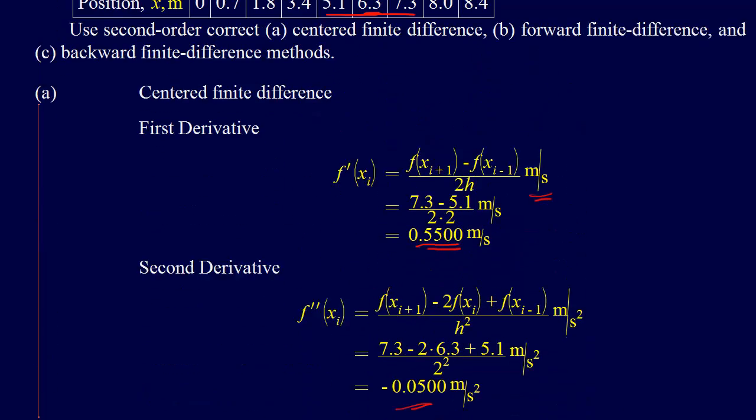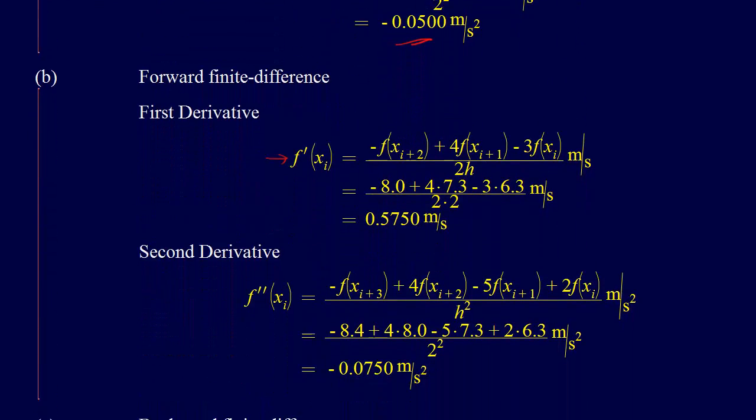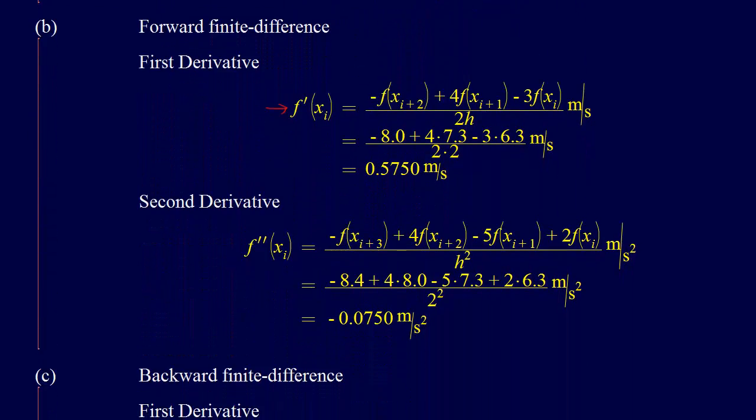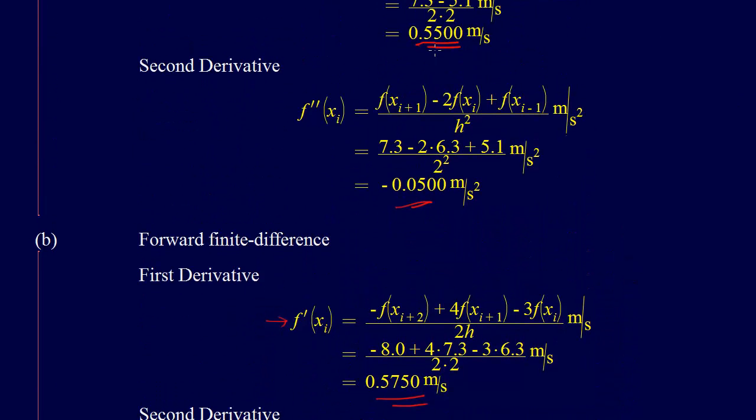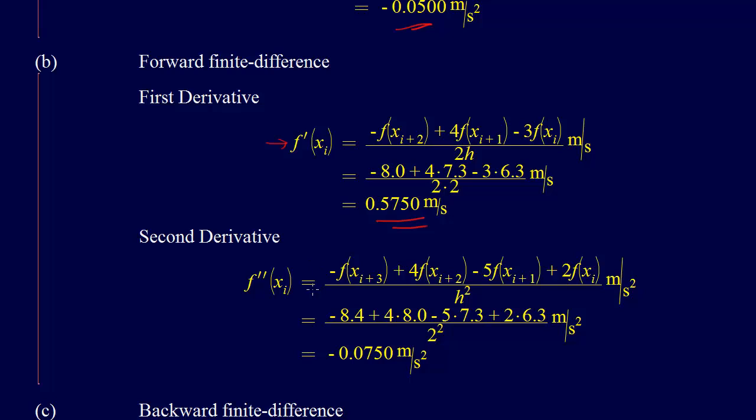We're going forward, so that's 6.3, 7.3, and 8.0. So that resulted in 0.5750, and if we compare that to our previous value that we got of 0.55, that's in the same ballpark, given that our step size is huge. Our step size is 2, so that seems reasonable.